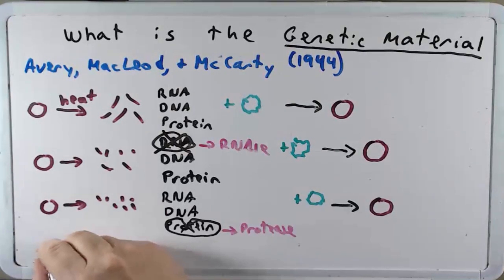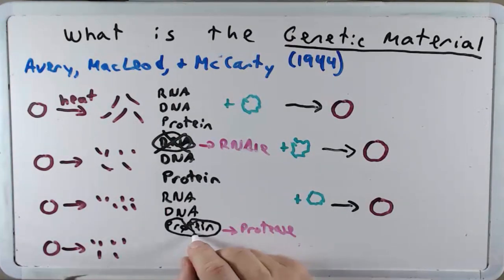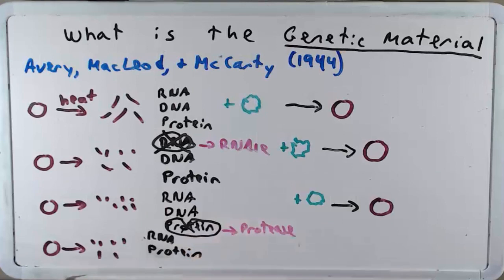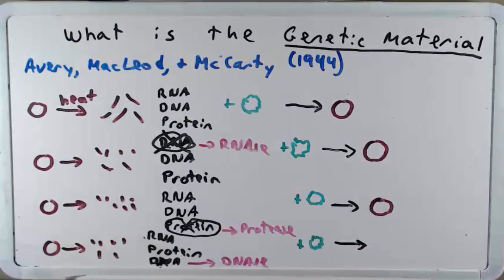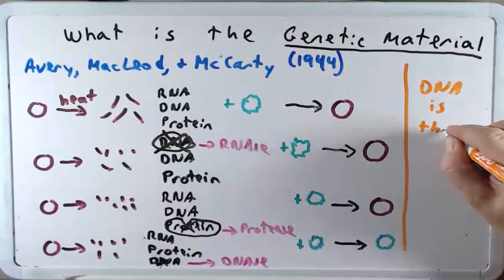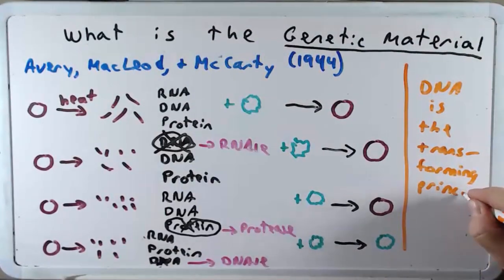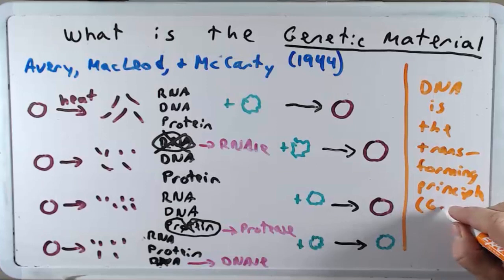Now lastly, what they did is they took that smooth bacterium, heated it up to get all that debris. And this time, they didn't remove the protein, they didn't remove the RNA, but they removed the DNA. So RNA, protein still present, and DNA was removed with an enzyme called DNase. They then added the rough bacterium. And when they looked at the bacterium to allow enough time for transformation to occur, they observed no transformation. If you were to put this in a mouse, the mouse would have lived because the bacterium would have been destroyed by the mouse's immune system. So from this, they concluded that DNA is the transforming principle. And what they meant by that was that DNA was the genetic material.